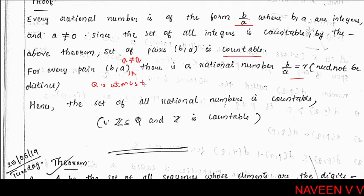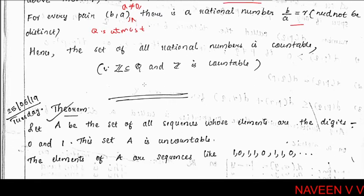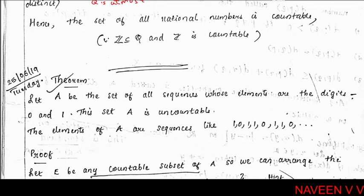Next theorem. Let A be the set of all sequences whose elements are the digits 0 and 1. This set A is uncountable.